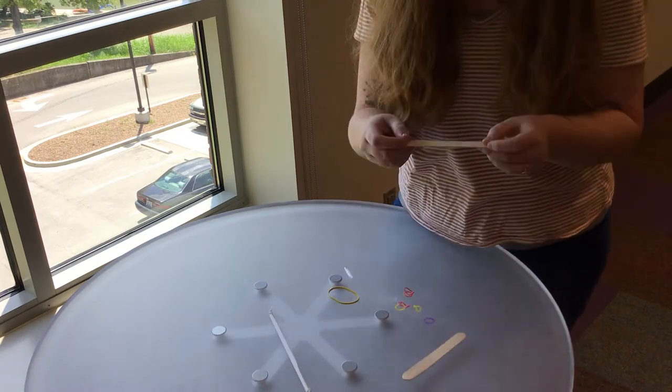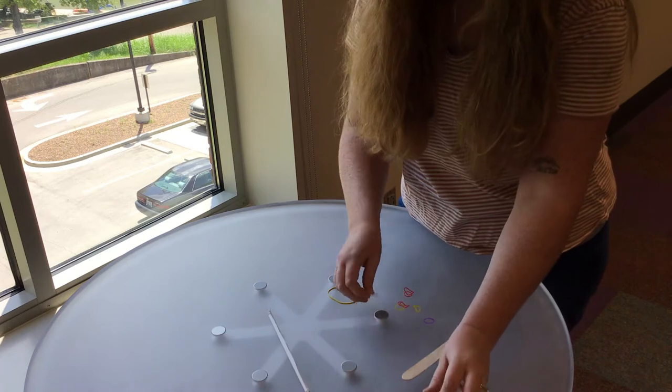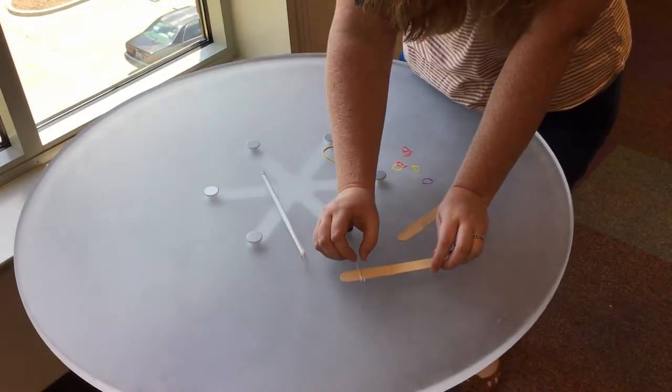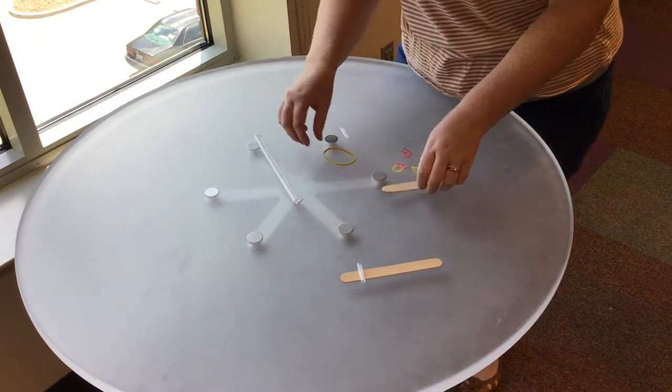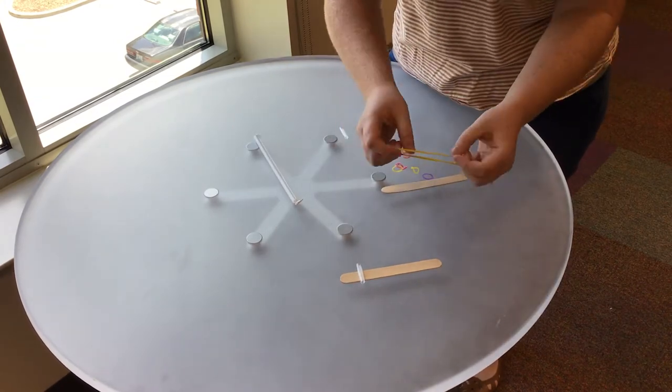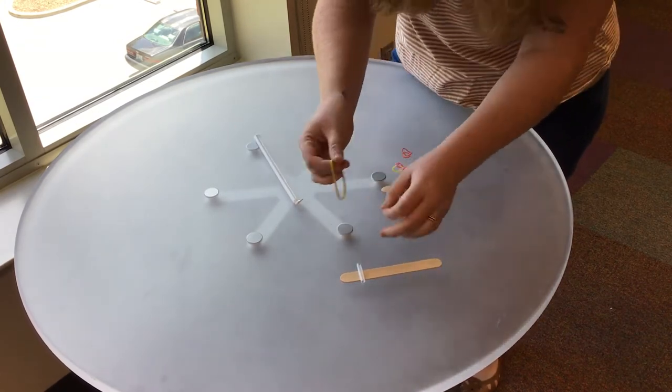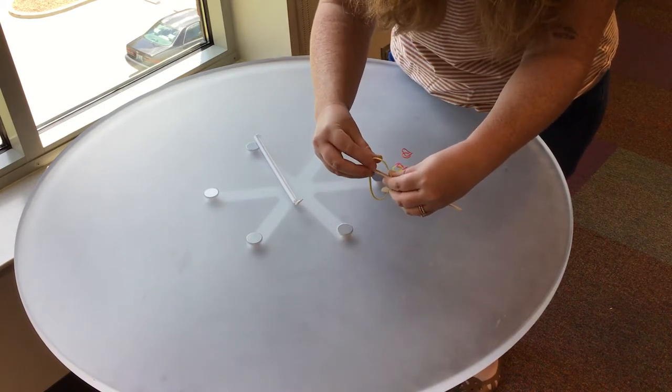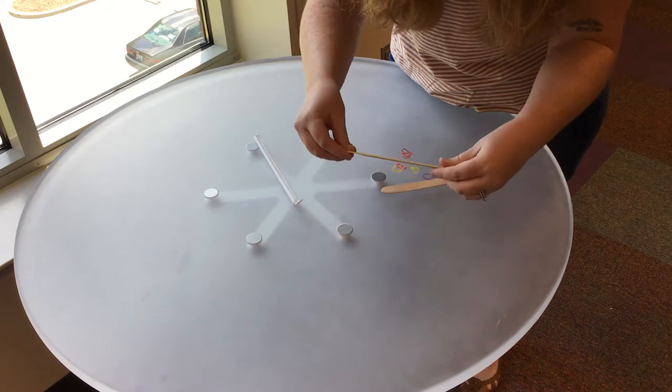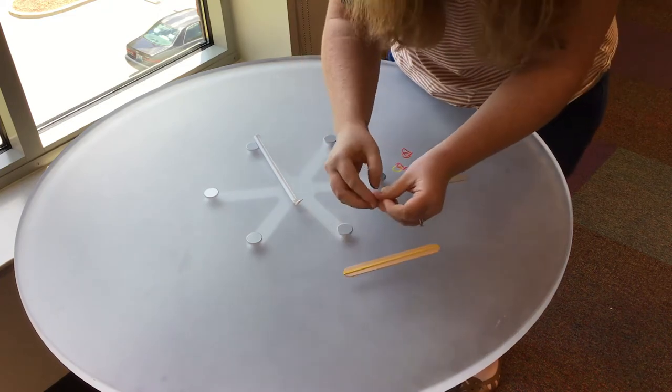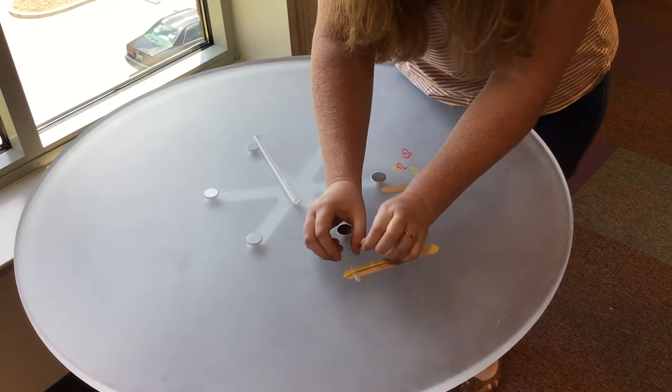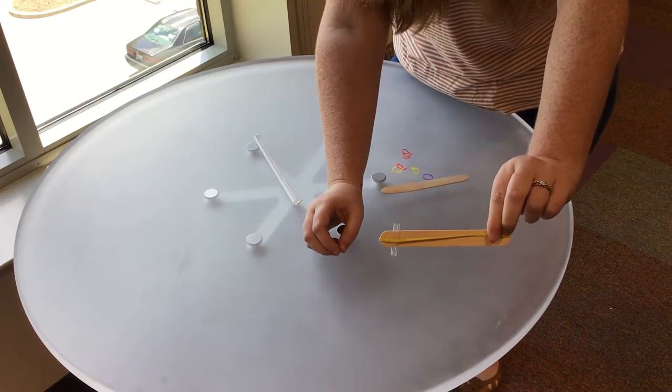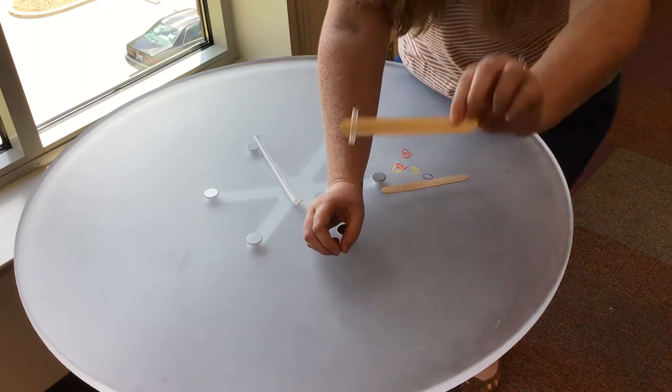Next we're going to take one craft stick and we are going to put our straw right on top of the craft stick. Next we're going to grab a big rubber band and we are going to put that on top of our straw. So I've got the big rubber band over the craft stick and it's sitting on top of our straw piece. Not both straw pieces just one.